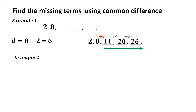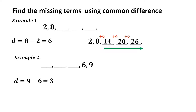Example number 2: the given arithmetic sequence has 3 missing terms and the available terms are 6 and 9. To find the missing terms, we will use the common difference. The two consecutive terms are 6 and 9. So we have D equals 9 minus 6, which equals 3. Therefore, the common difference is 3.